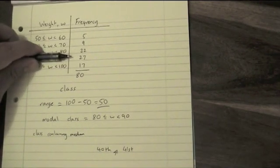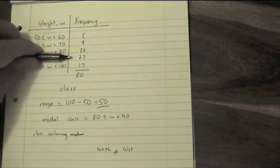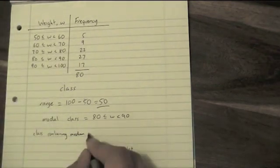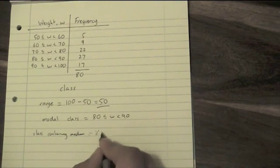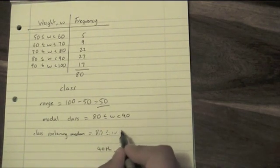So it's obvious that the 40th and the 41st are in the fourth row. The class containing the median, again, we just write out the title of it, write out the whole thing.